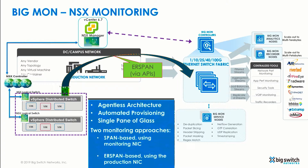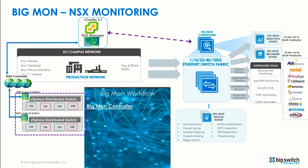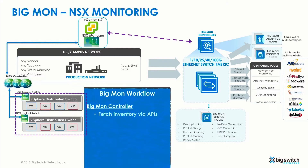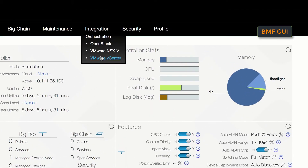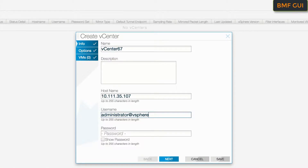Let's see how BigMon NSX integration enables visibility in the virtual environment. Once the user has entered VMware account credentials, the BigMon controller will pull the inventory for the entire vCenter, thus enabling visibility into all the VMs managed by the vCenter. Now let's see how this is accomplished on the BigMon controller UI. Navigating to the integration menu, we select VMware vCenter and register it with the BigMon controller.